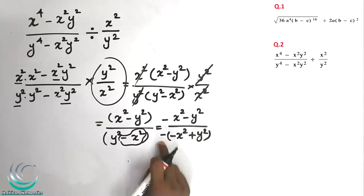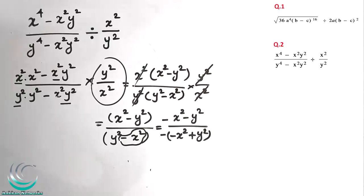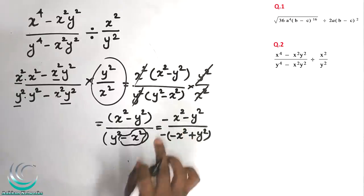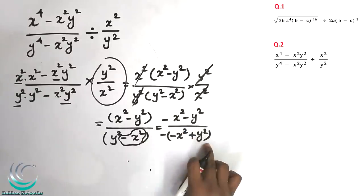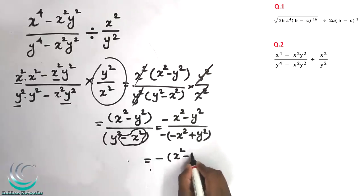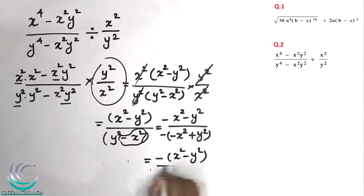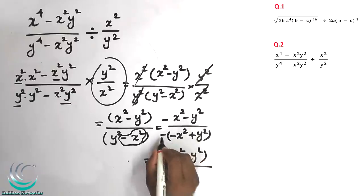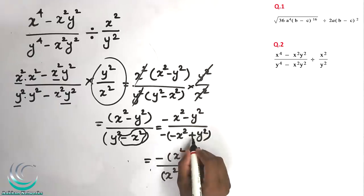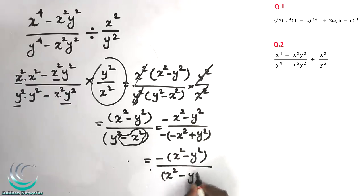We have a minus multiplied: minus into minus gives plus. So x squared minus y squared divided by minus of y squared minus x squared — the minus into plus gives x squared. That's minus into plus.